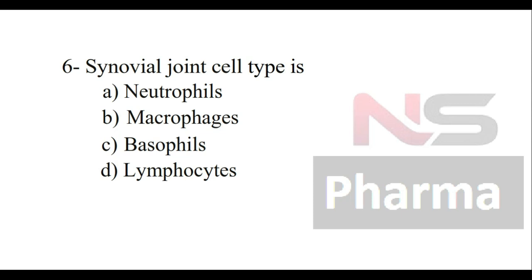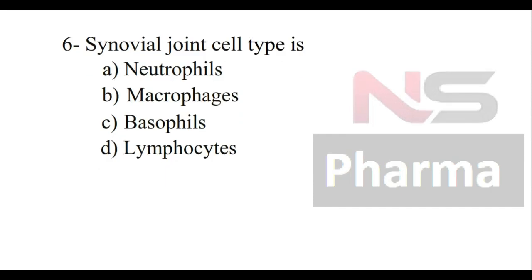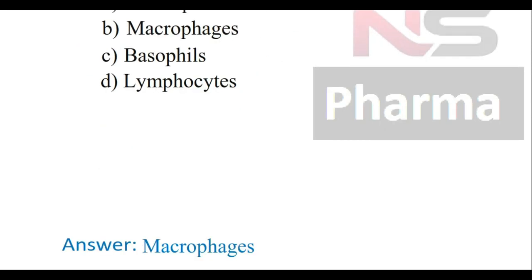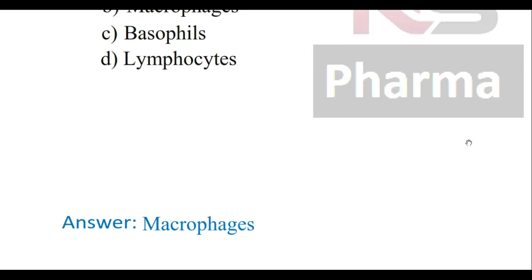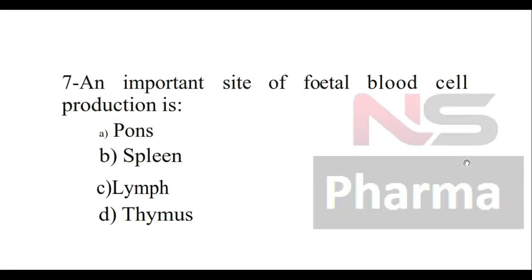Question number six: The synovial joint cell type is — Option A: Neutrophils, Option B: Macrophages, Option C: Basophils, Option D: Lymphocytes. The answer is macrophages.